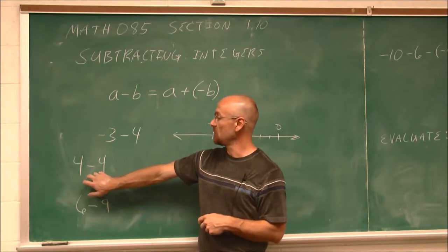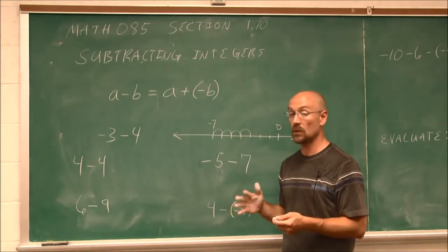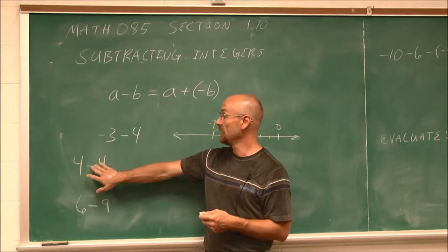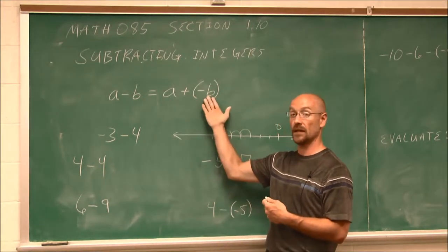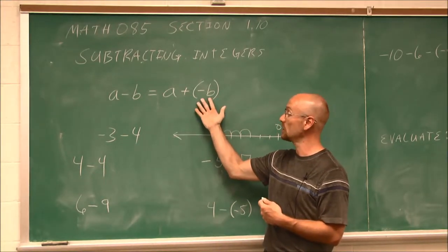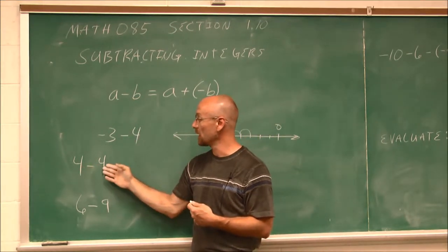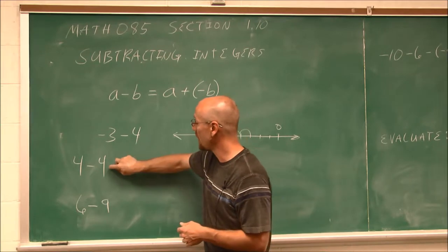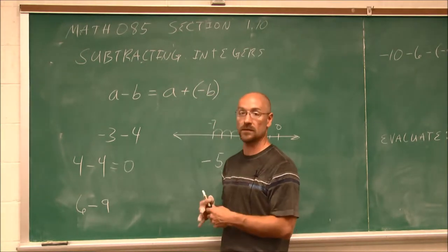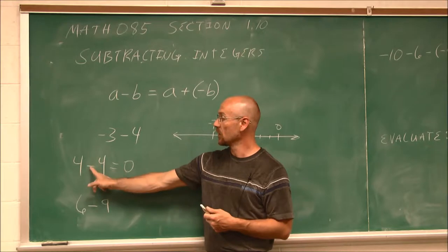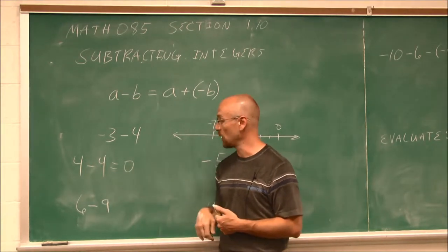If we look at this example, we have 4 minus 4. In the previous section, we talked about opposites — 4 and negative 4 are opposite values. We can think of it as 4 plus a negative 4. A number and its opposite is always 0. Conceptually, if we start at 4 and go to the left 4, we return to 0, our reference point.